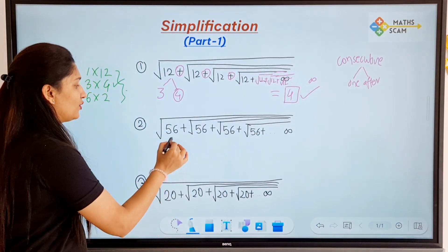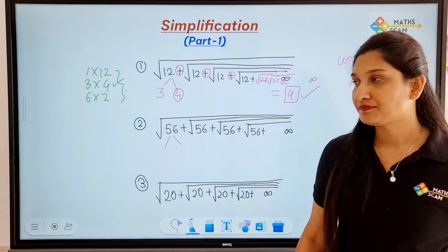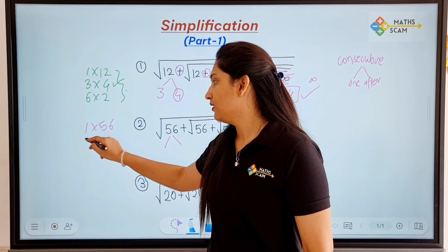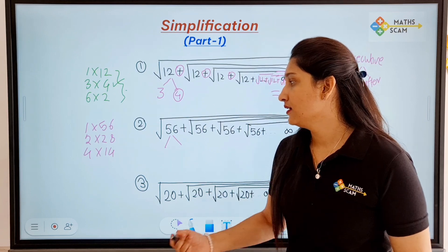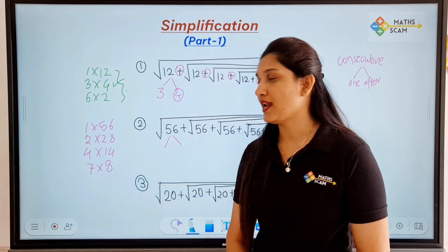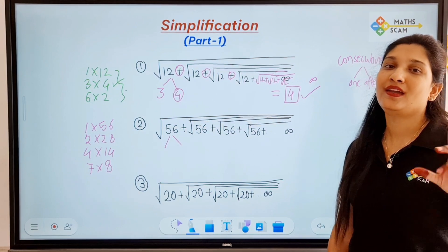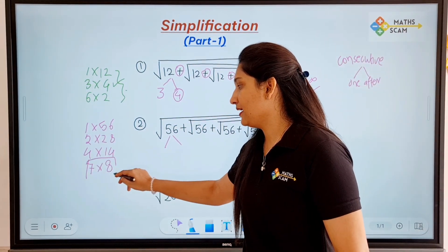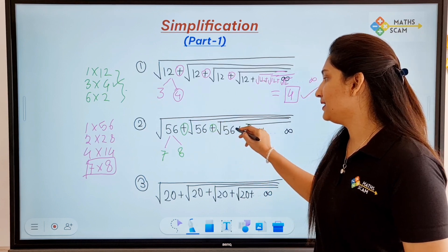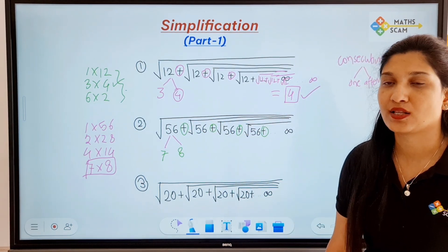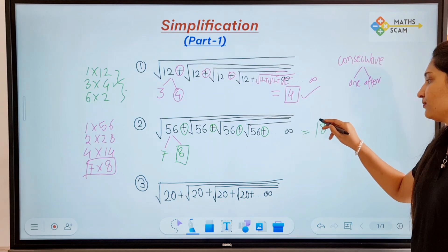Now try this: the consecutive factors of 56. The factors of 56 are: 1×56, 2×28, 4×14, and 7×8. Out of all these, the consecutive factors are 7 and 8. The sign between all the square roots is positive plus, so we choose the greatest number. The answer of this question is equal to 8.